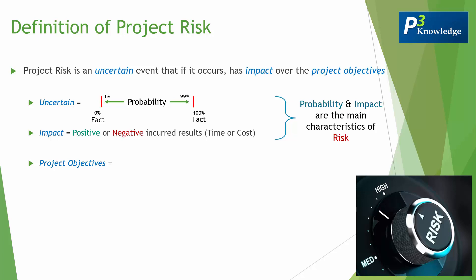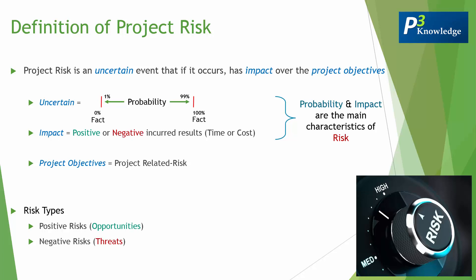The third highlighted word is 'project objectives.' This tells us it is a project-related risk, because we have so many uncertainties around the world, and the one impacting our project is considered a project-related risk. Basically, we have two main types of risks: positive risks and negative risks. Positive risks are called opportunities, and negative risks are called threats.